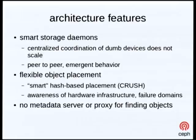The last and perhaps most significant design feature, at least from the object storage layer's perspective, is that there's no metadata server or proxy necessary for finding objects. The client library is smart enough to know what the topology of the cluster is and what the hashing algorithm is. It can calculate and go directly to the server that has the data it needs. So you get clients with massive parallel access to all storage servers and direct access without a lookup stage or proxy.